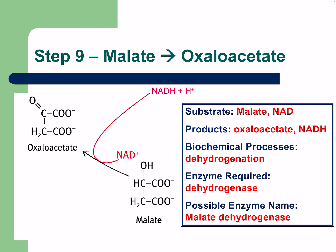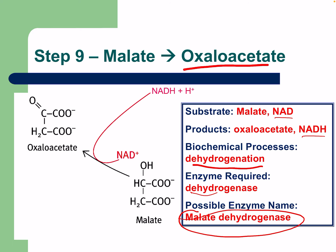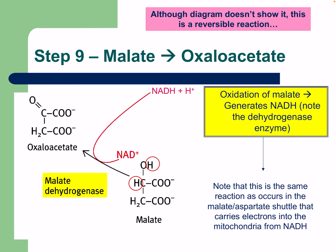Step nine: malate to oxaloacetate. Another NAD+ is used and another NADH is produced in another dehydrogenation reaction, catalyzed by malate dehydrogenase. The oxidation of malate generates NADH. Note that this is the same reaction as occurs in the malate-aspartate shuttle that carries electrons into the mitochondria — we'll cover that later.